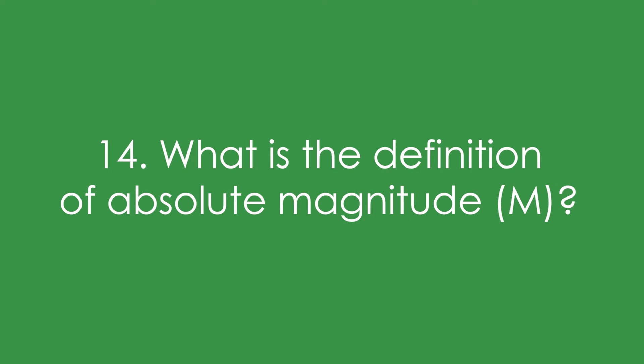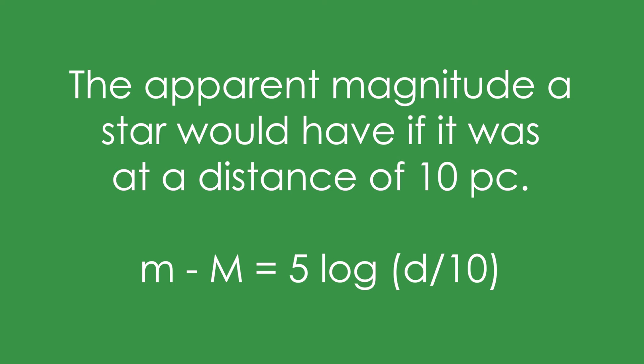Question 14: What is the definition of absolute magnitude? It's the apparent magnitude a star would have if it was at the arbitrary distance of 10 parsecs. Apparent magnitude take away absolute magnitude equals 5 log the distance in parsecs divided by 10.